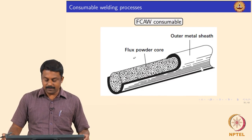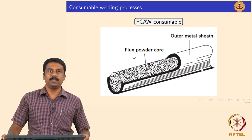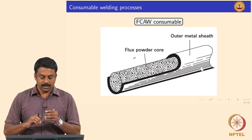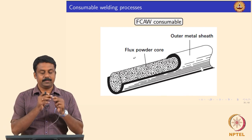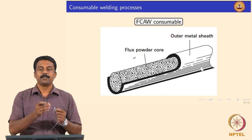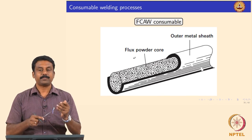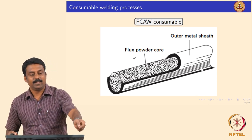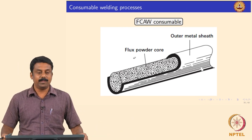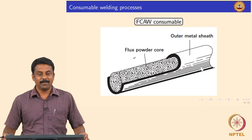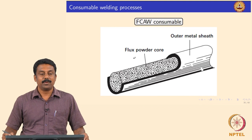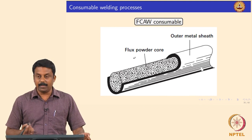This is the cross-section of the electrode shown in the last class. You have an outer sheath and the flux is inside — it is almost compacted. This is a 2.4 mm diameter FCAW electrode; the flux will not come out even if you tap it because it is already compacted with binder.